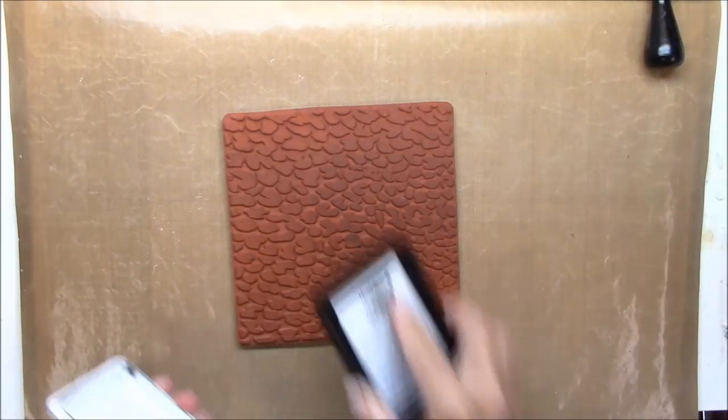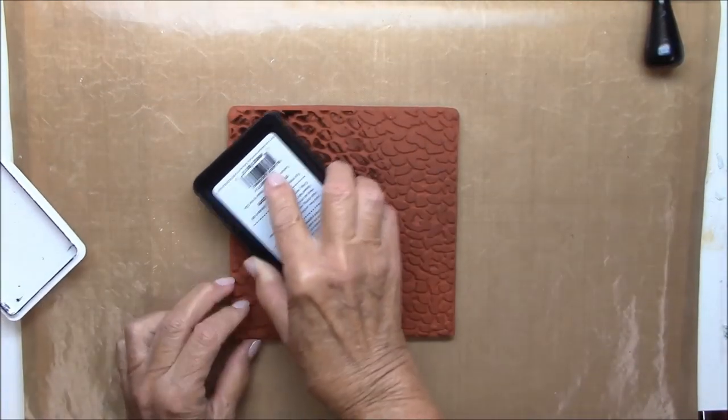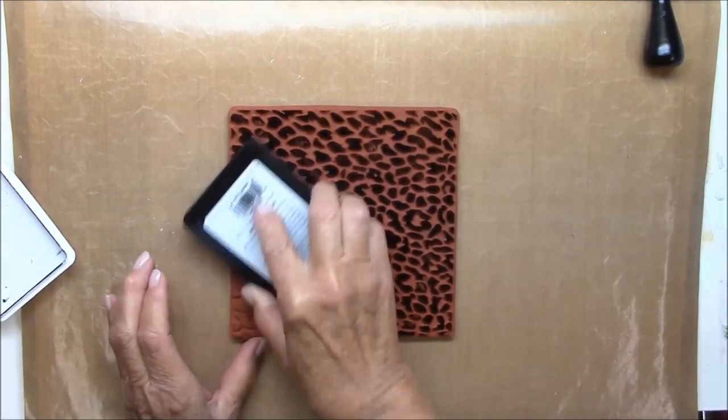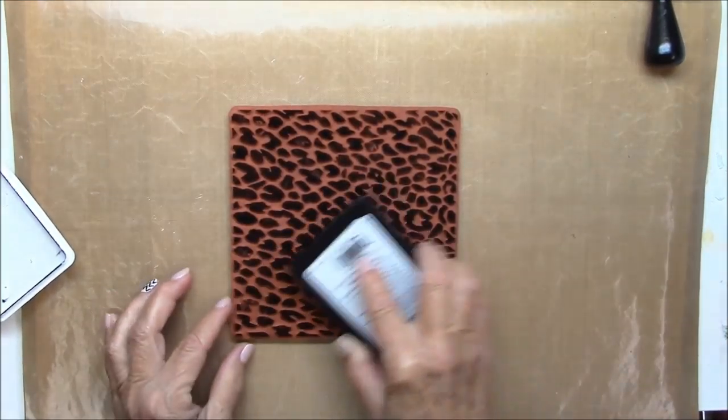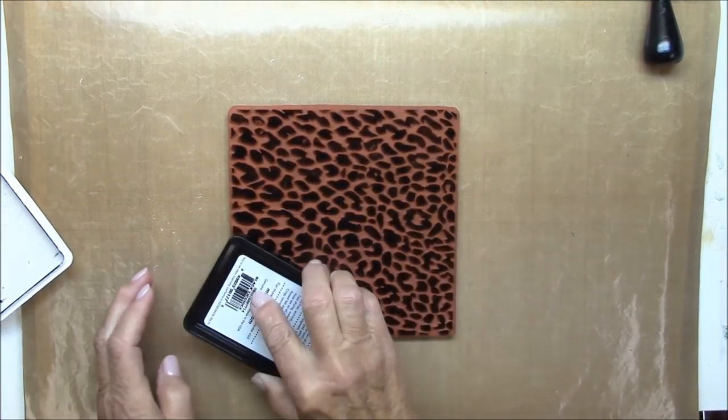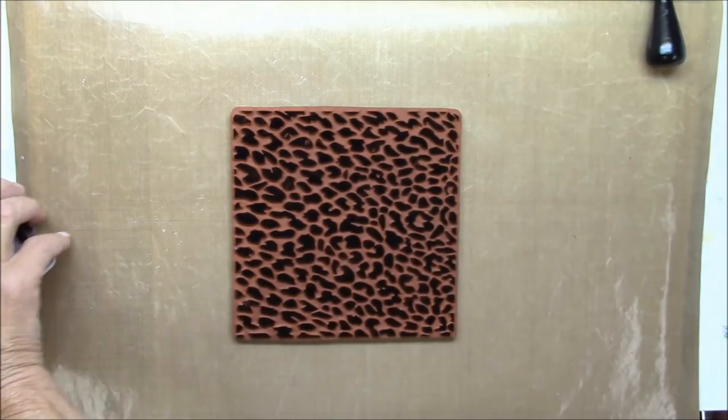To start with I'm going to ink up my cheetah background with the black licorice hybrid ink. You don't have to be too particular about how you ink it up as long as you get it mostly covered. For this technique it really doesn't matter that much.